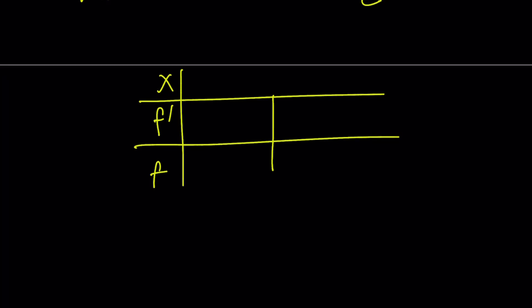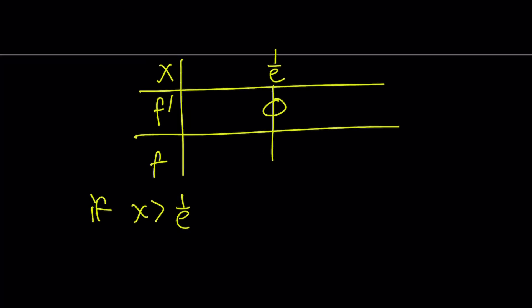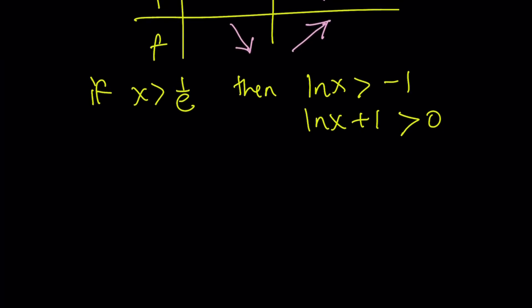The question is what happens to the right and left of 1 over e. If x is greater than 1 over e, then ln x is greater than negative 1, so ln x plus 1 is positive — meaning the derivative is positive to the right of 1 over e, and negative to the left. This tells us the function is decreasing on negative infinity to 1 over e and increasing on 1 over e to positive infinity, giving us a minimum at x equals 1 over e.